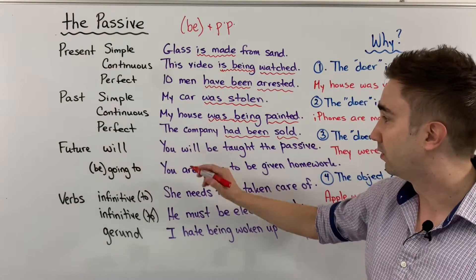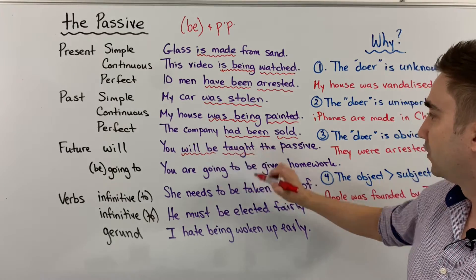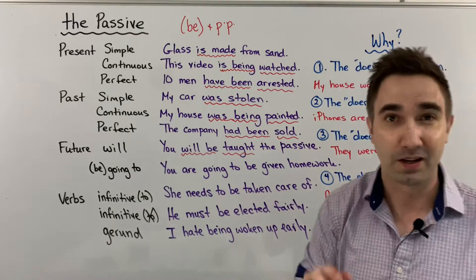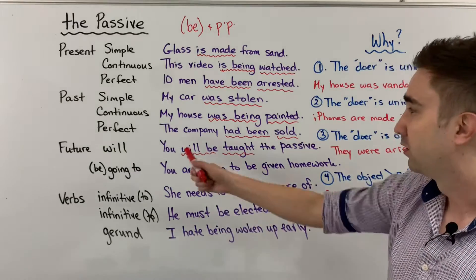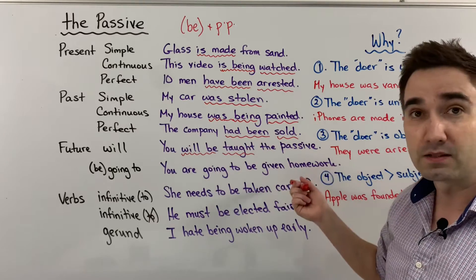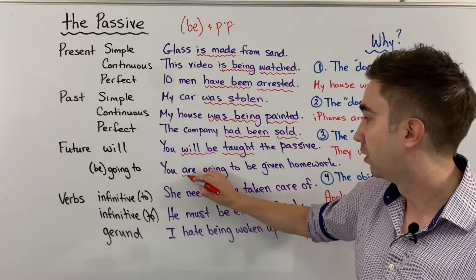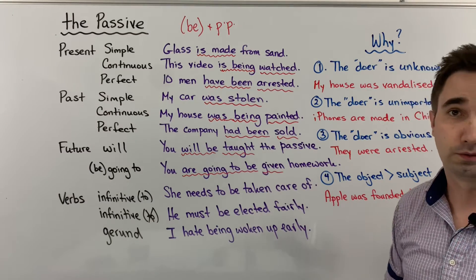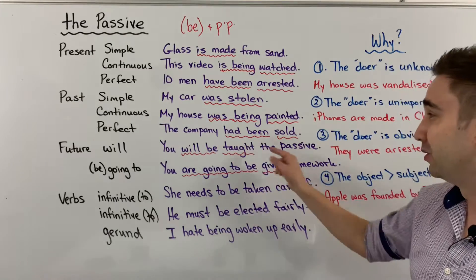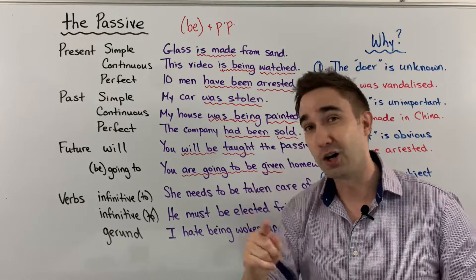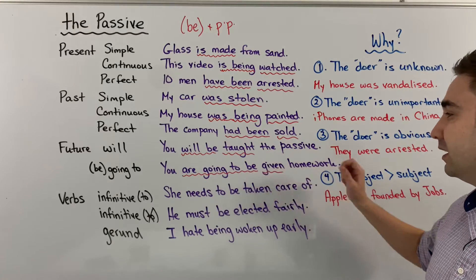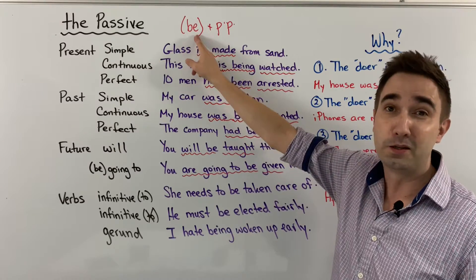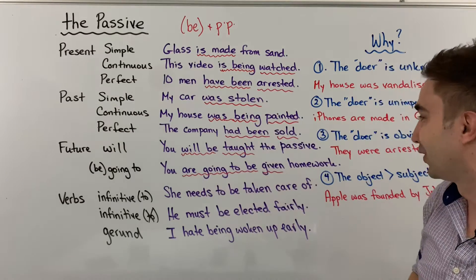For future with will, this one's maybe a little easier: you will be taught the passive. Well, maybe now you are being taught the passive, but in your English class in the future, you will be taught the passive. And for going to: you are going to be given homework. If your teacher teaches you the passive, you are going to be given homework. So 'are going to be' is kind of our be here — that's a little bit tricky, not so easy.